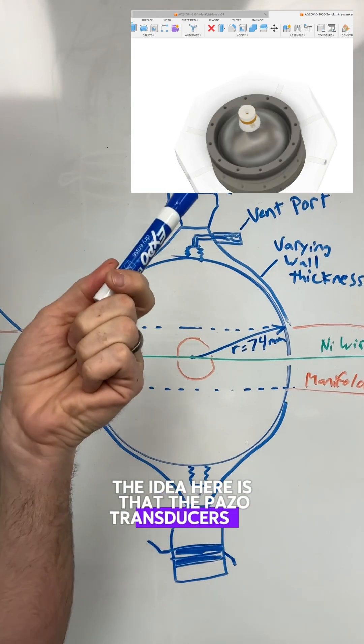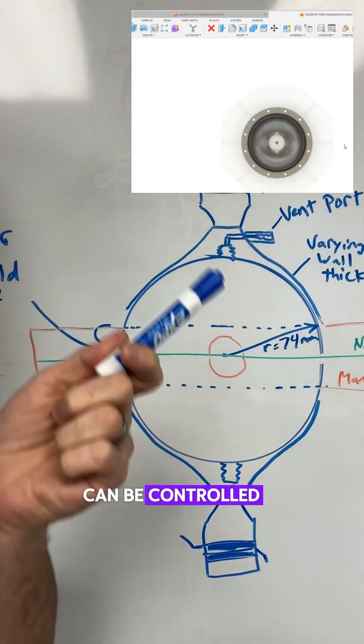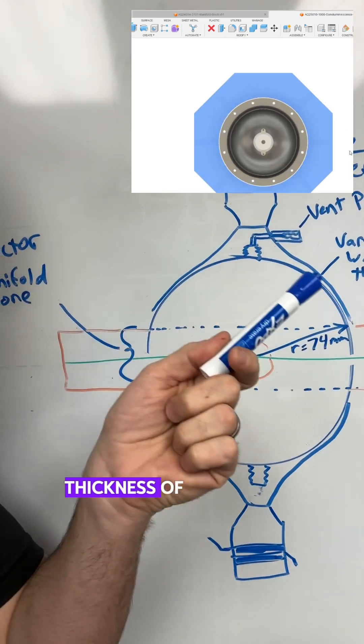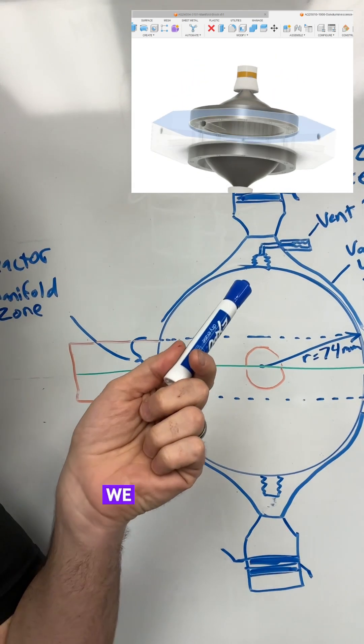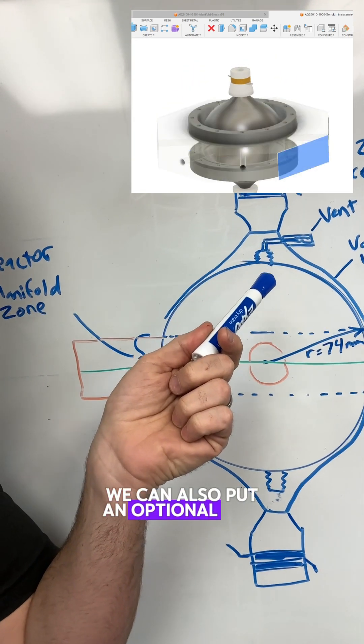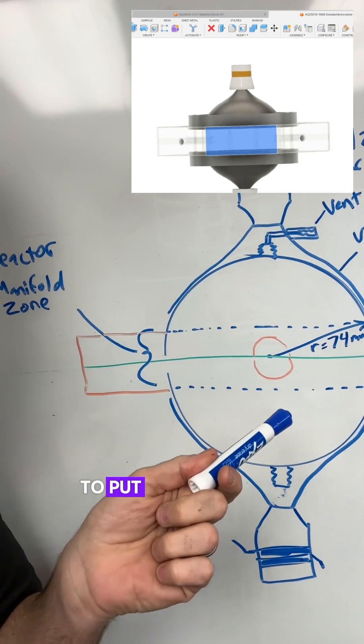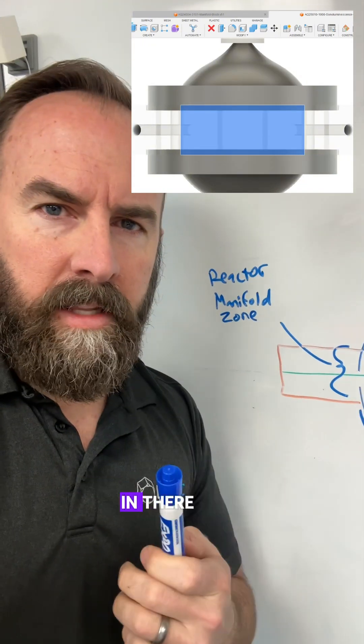The idea here is that the piezo transducers on top and bottom can be controlled and the wall thickness of the cavities of the hemispheres can be controlled. We can also put an optional stem top and bottom to put another acoustic focusing lens in there.